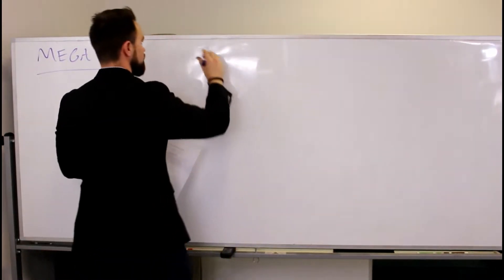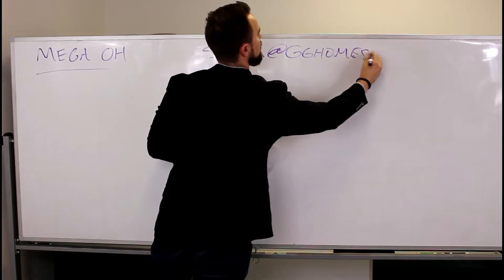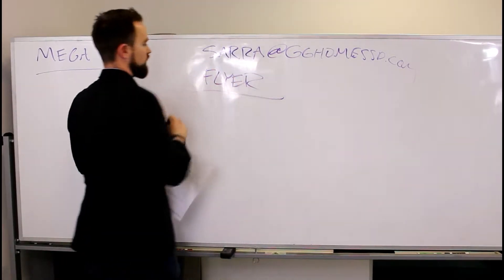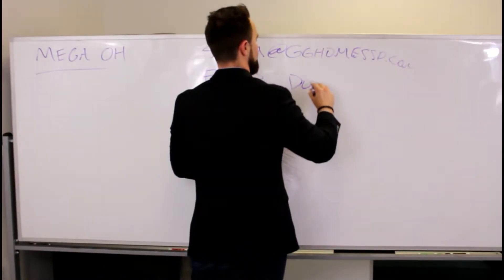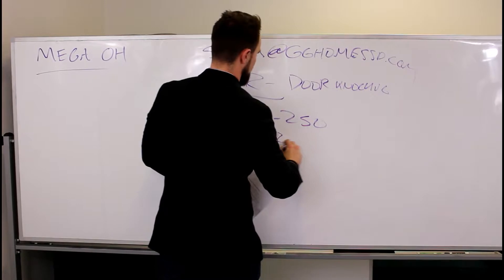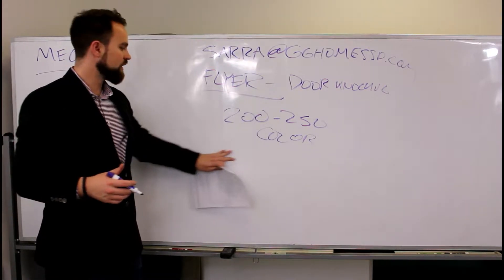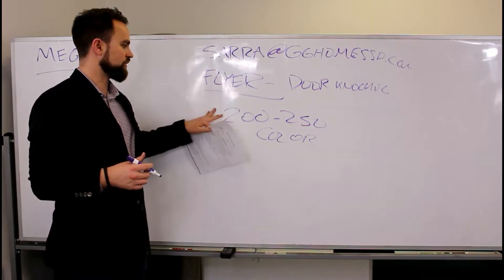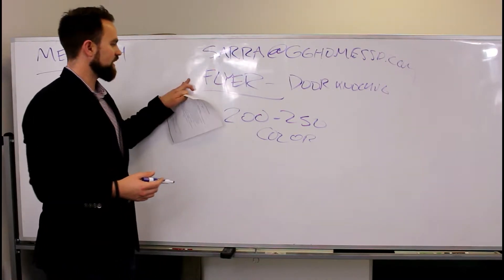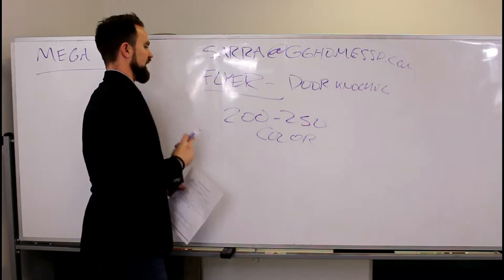One of the last things: email Sara at gghomessd.com with the property address and ask for a flyer for canvassing and door knocking — this is your door-knocking flyer. You'll want to get 200 to 250 color copies. You and your partner are going to go door knock the closest 200 to 250 homes the day before or the morning of — Friday afternoon or Saturday morning. If they don't answer, drop the flyer at the door. One thing Sara commonly needs is your headshots — make sure she has an adequate photo for the flyer.